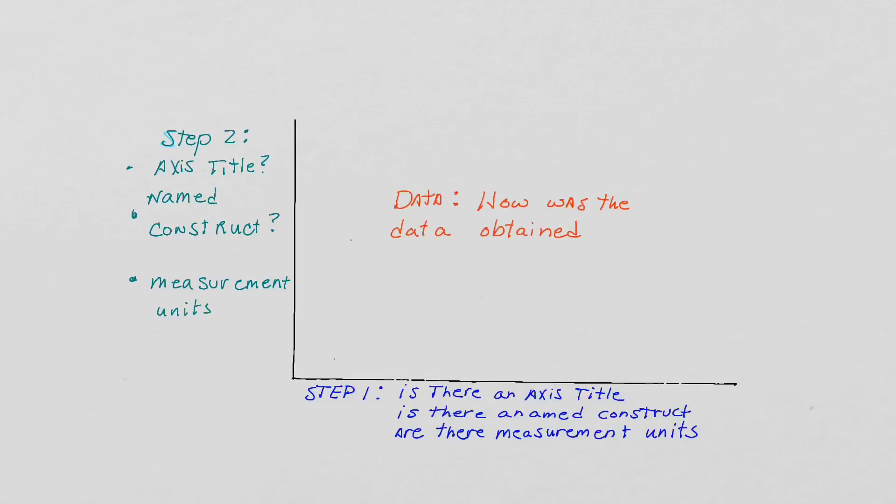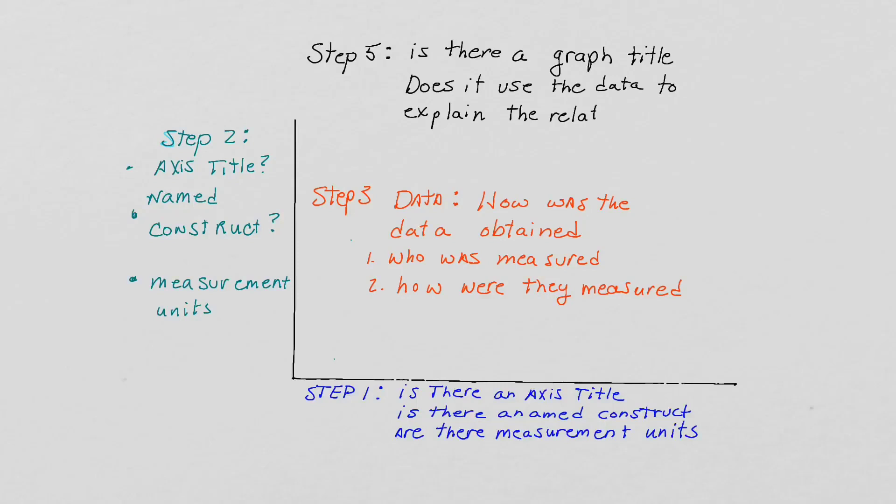Step three, the data. How was it obtained? What was measured? What is being presented? Step four, is there a graph title? Does it use the data to explain the relationship between the axes?